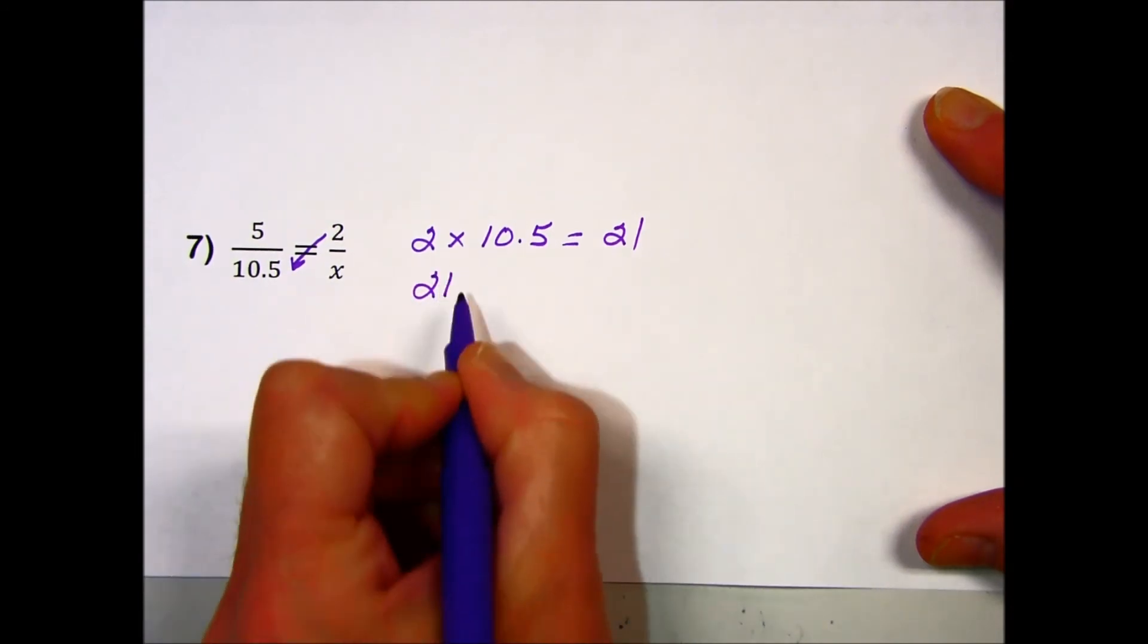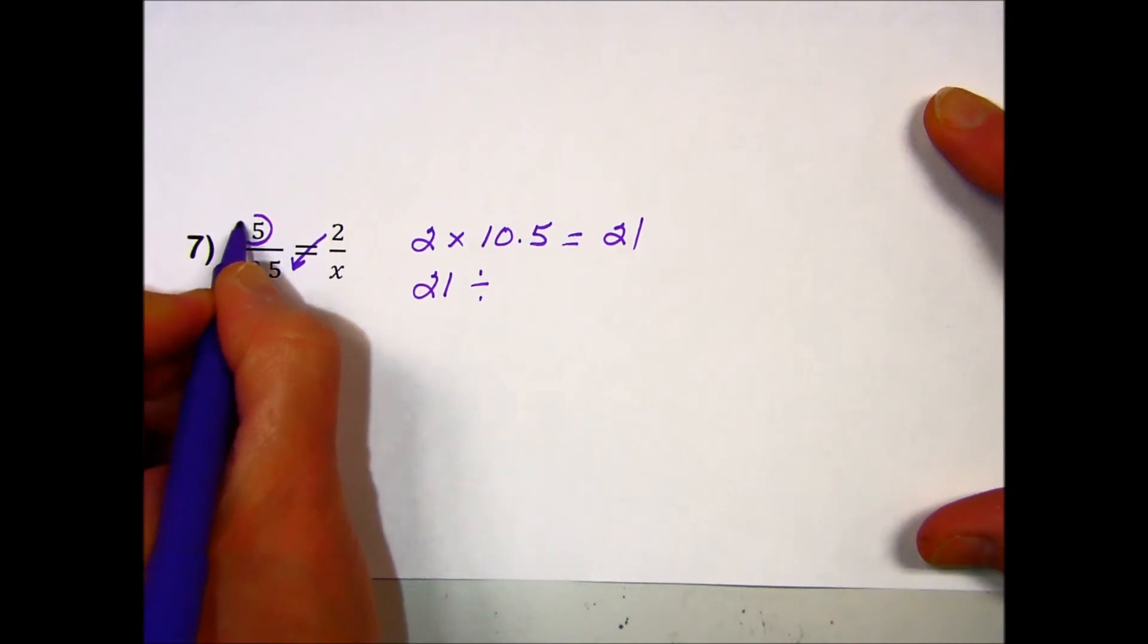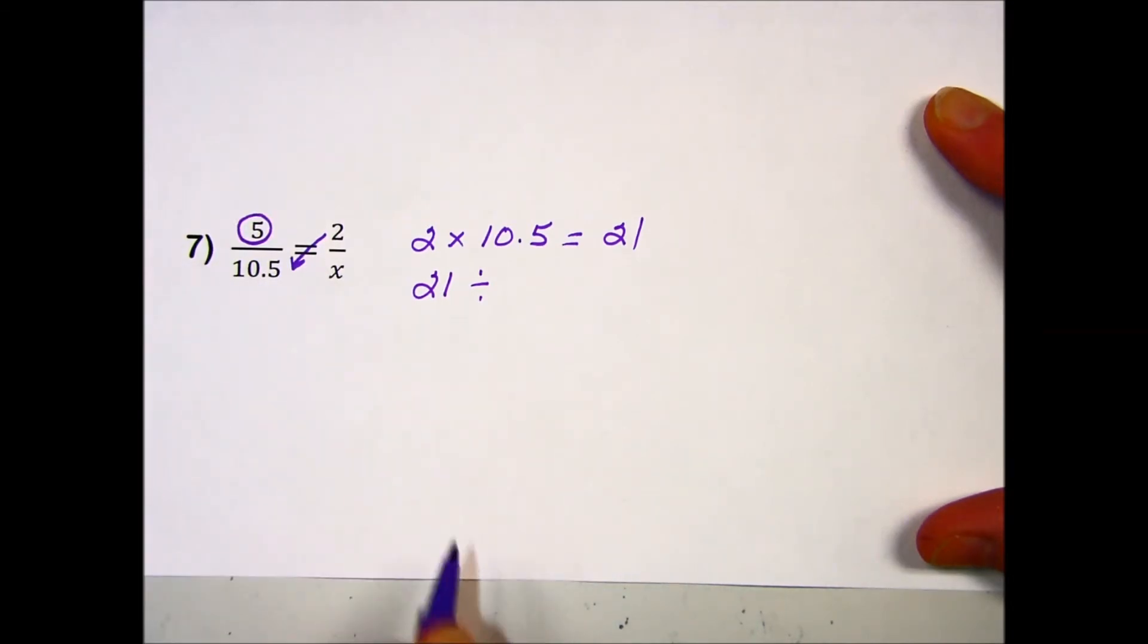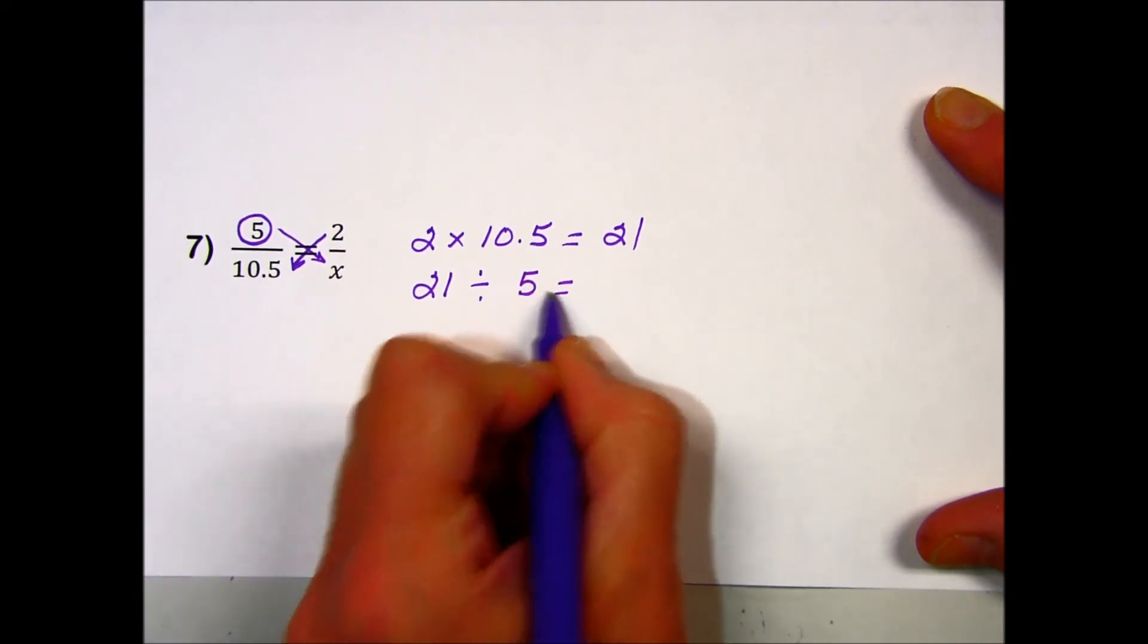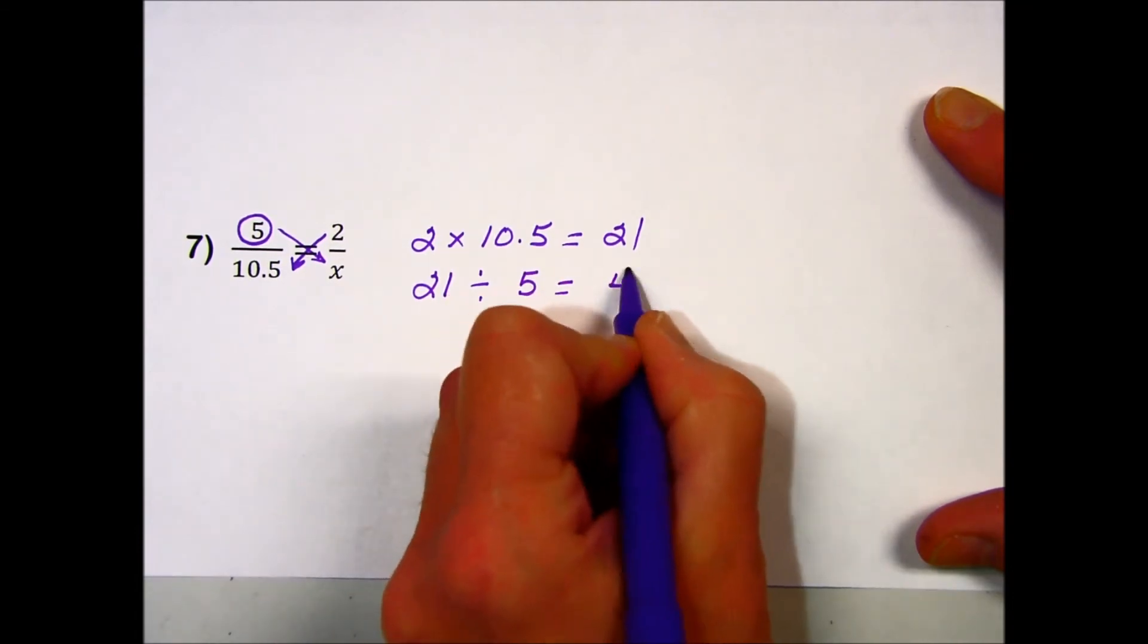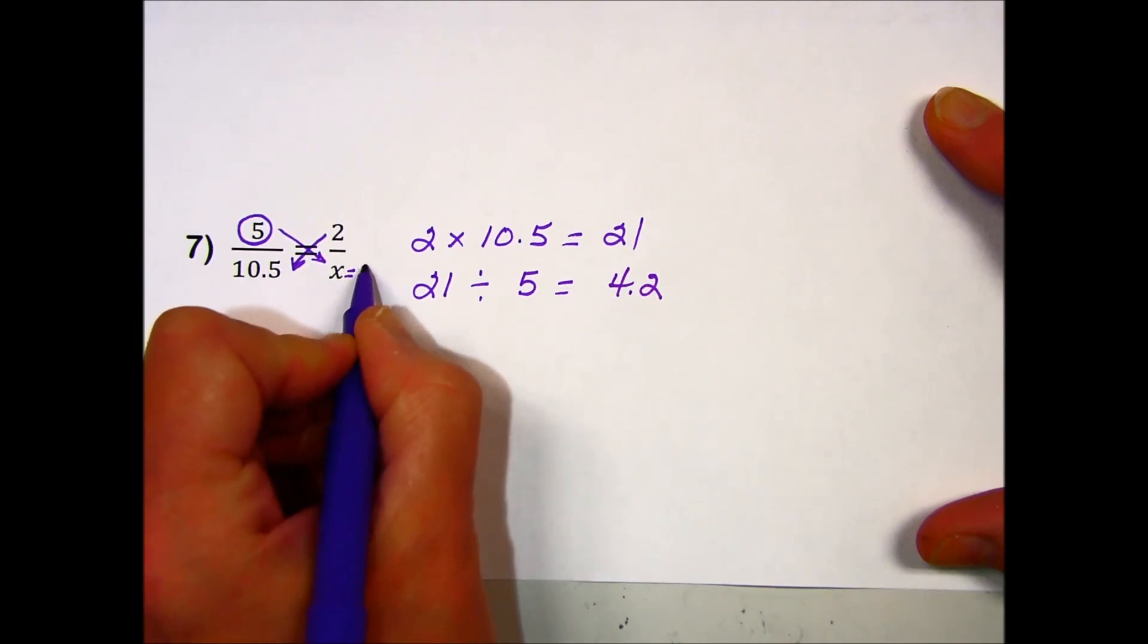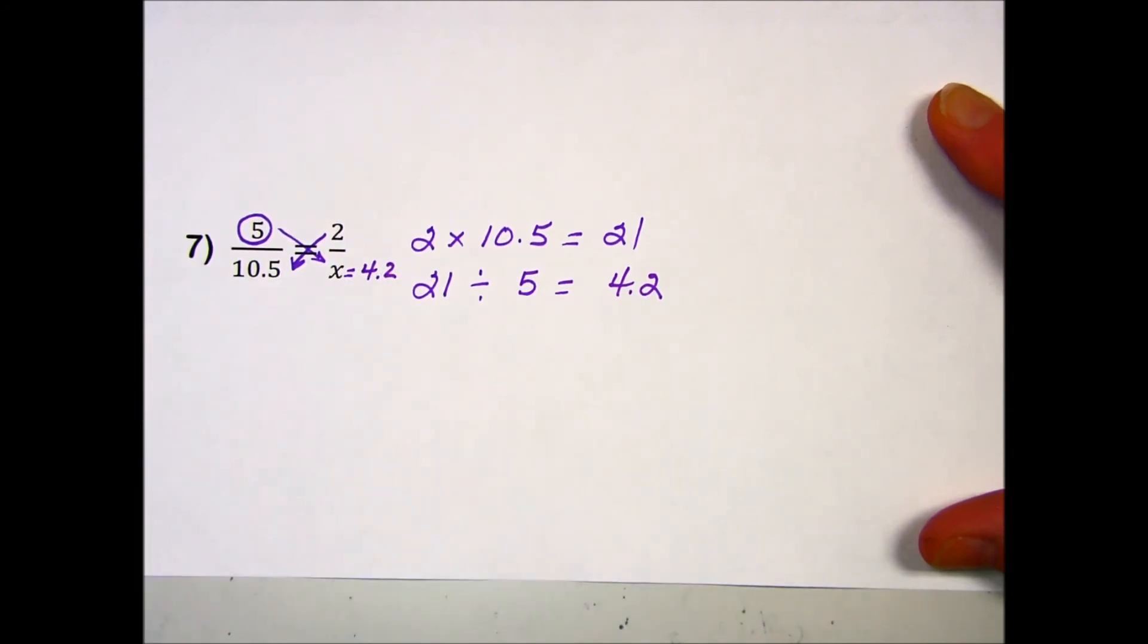Taking that result, we divide it by the third number we haven't used, which is part of the other diagonal with the missing quantity. 21 divided by 5 results in 4.2, so the missing value in our ratio is 4.2.